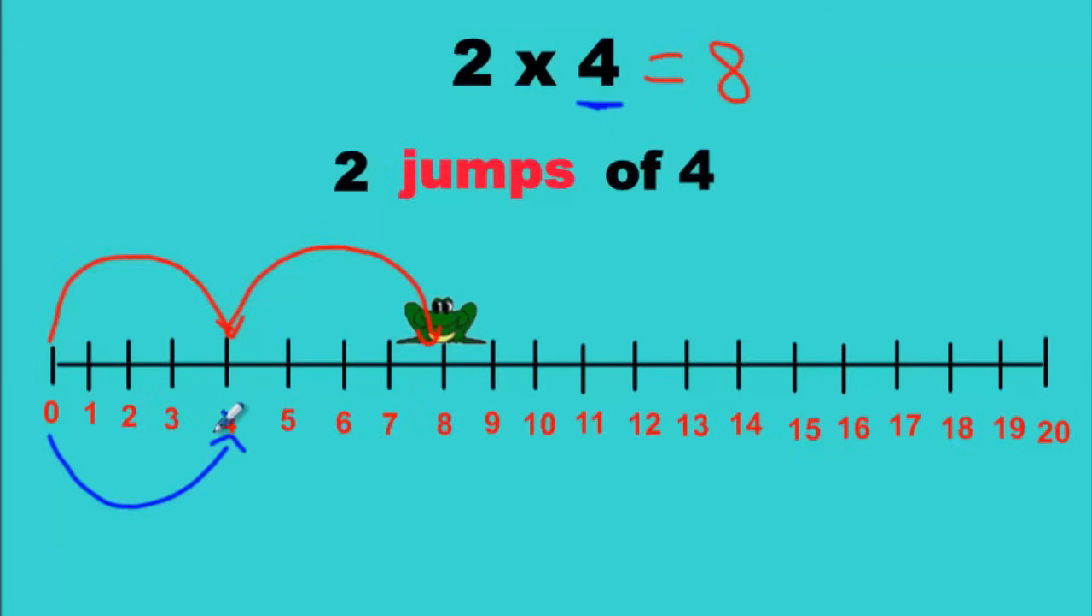You never count the number you start on. So now you're starting on the four. Don't count it. Count four after. Go one, two, three, four.